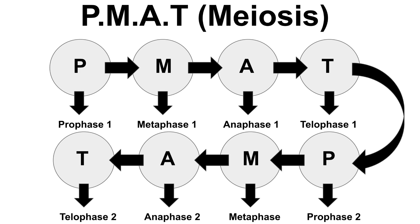PMAT stands for the following: the P stands for prophase, the M stands for metaphase, the A for anaphase, and the T for telophase. In meiosis, however, the cells have to do PMAT twice. So we have PMAT number one and PMAT number two.